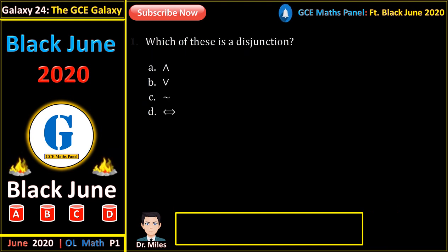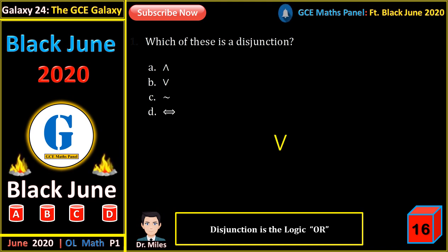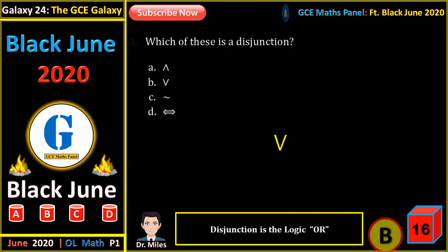Which of these is a disjunction? A disjunction is the same as 'or' — the logical OR. The logical OR is like union, but straight lines are used. So we have B.